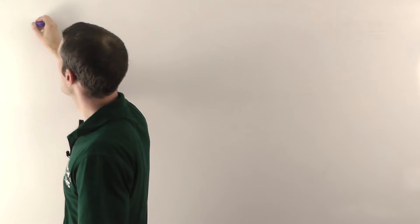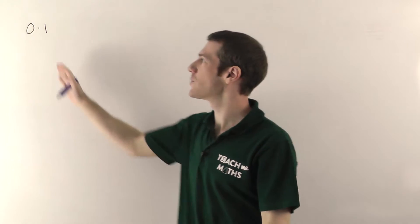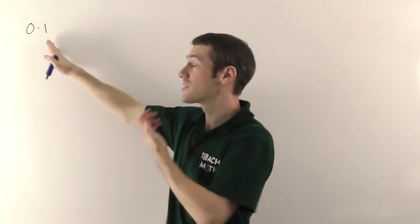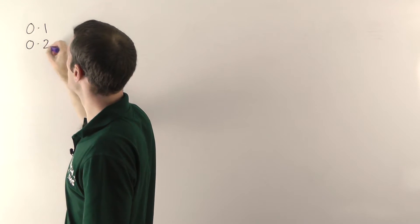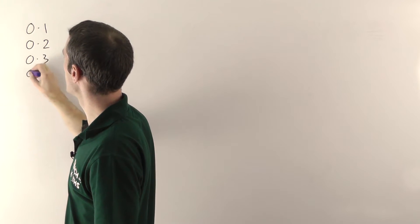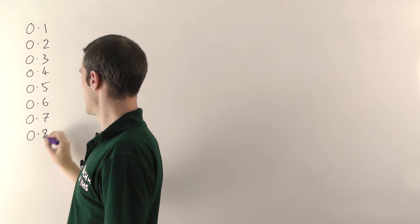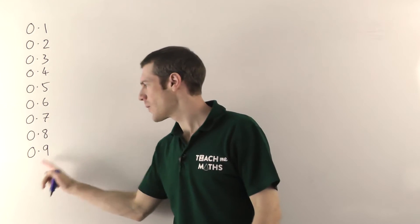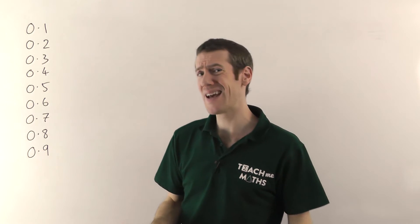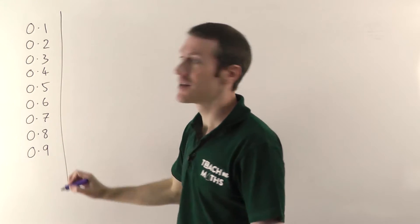Now before we get going, I'd like to ask you a little puzzle. We're going to count, but instead of counting 1, 2, 3, 4 in the usual way, we're going to count in decimals. Starting with 0.1 and adding 0.1 each time: 0.1, 0.2, 0.3, and so on, up to 0.9. My question is — what comes next? 0.10? Have a think about that. We will come back to it a little bit later.